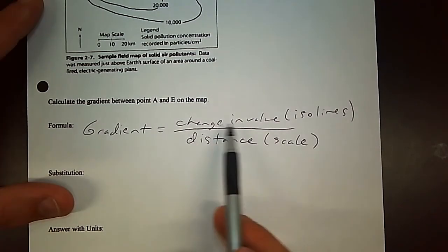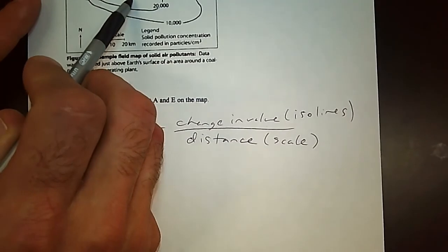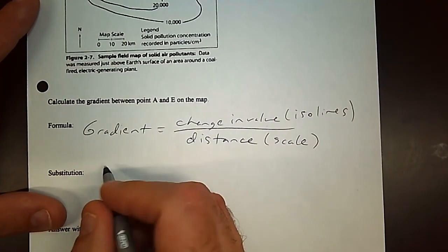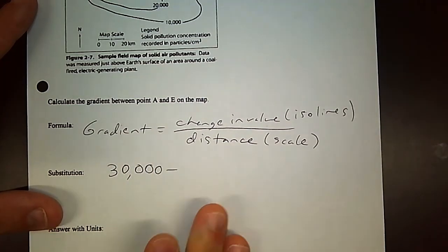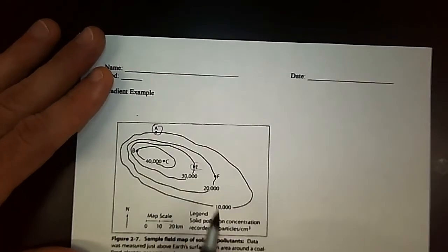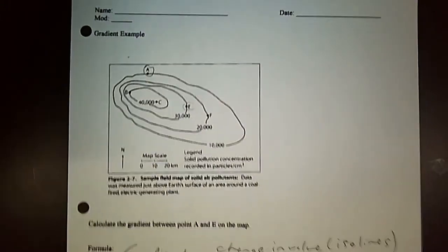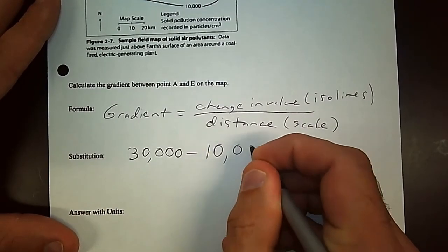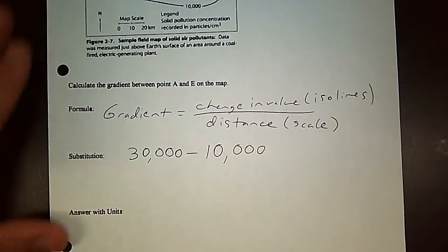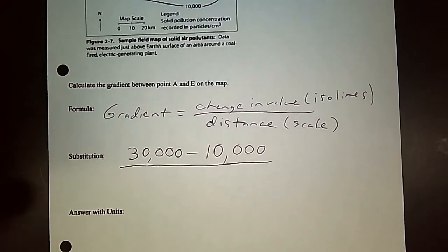But first I'm going to look at the change in value. So change in value is going to be what the ISO lines are reading. In the case of E, E is 30,000, you could read that off the ISO line right here. A is on the 10,000 ISO line mark. So I'm going to write that here, so 30,000 minus 10,000, and then you're going to divide by your distance.